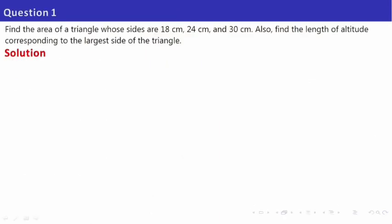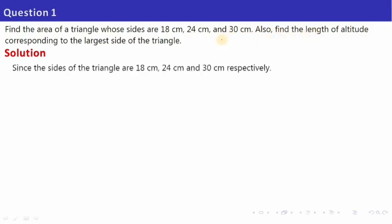Let's look at the first question. The question says: find the area of the triangle whose sides are 18 centimetre, 24 centimetre and 30 centimetre. Since three sides are given, this becomes your A, this becomes your B, and this becomes your C — the three sides of the triangle.